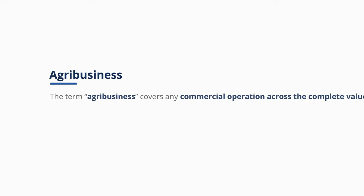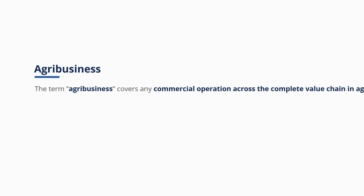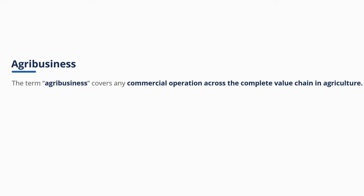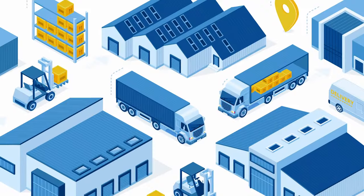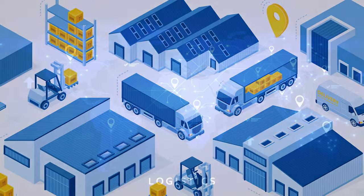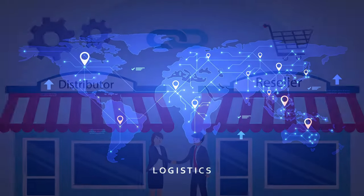The term agribusiness covers any commercial operation across the complete value chain in agriculture, from the sale of raw materials and resources necessary to create biological products to distributors and retailers that give those products to the end consumers.